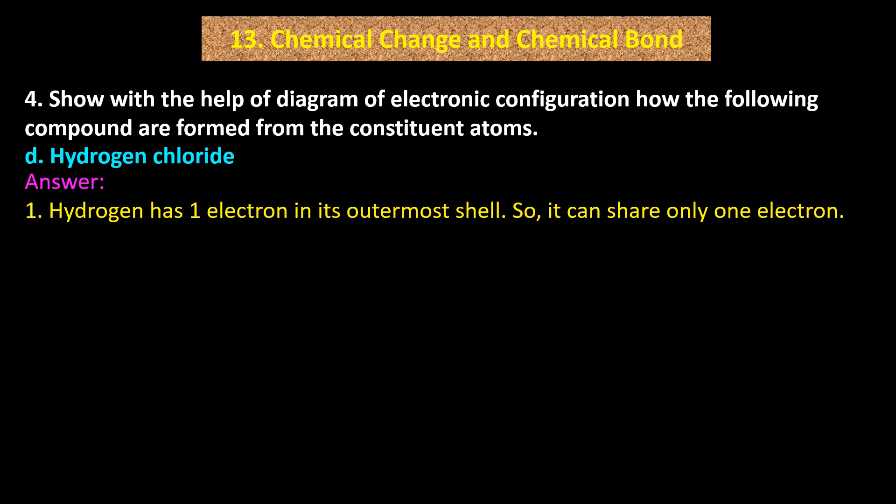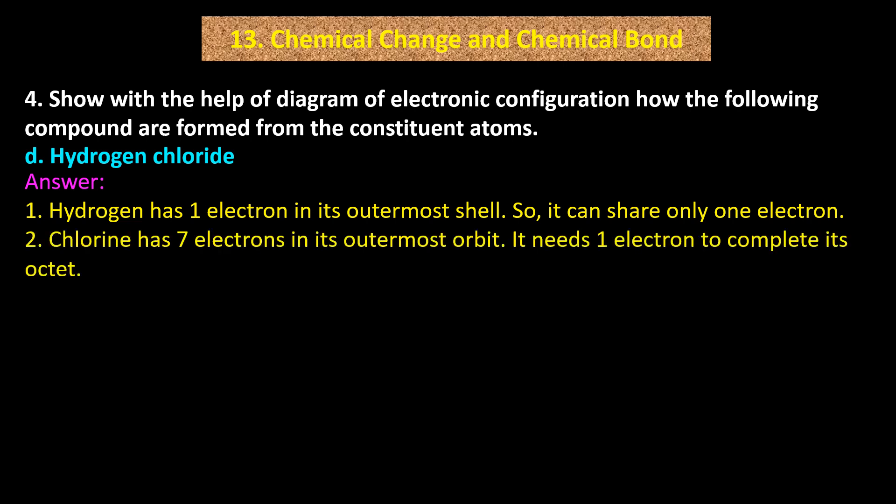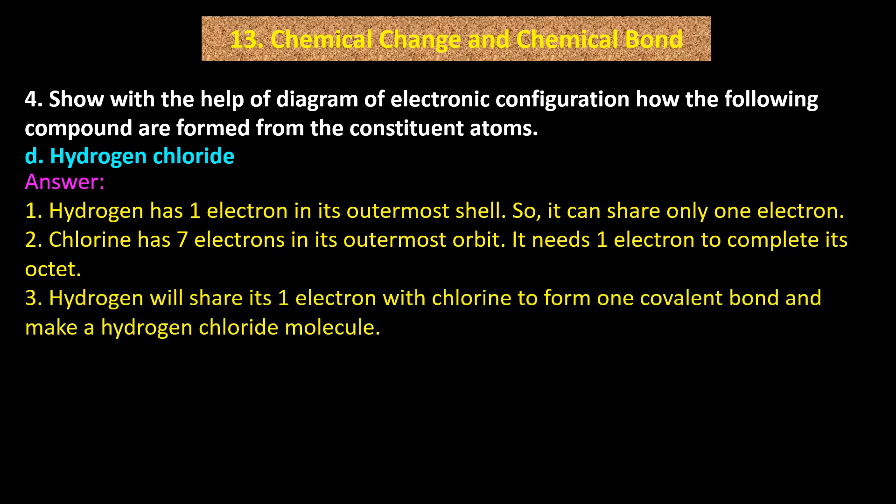D: Hydrogen Chloride. Hydrogen has one electron in its outermost shell, so it can share only one electron. Chlorine has seven electrons in its outermost orbit and needs one electron to complete its octet. Hydrogen will share its one electron with chlorine to form one covalent bond and make a hydrogen chloride molecule.